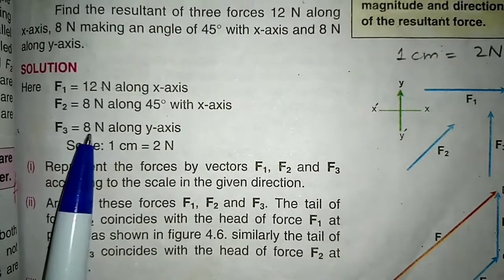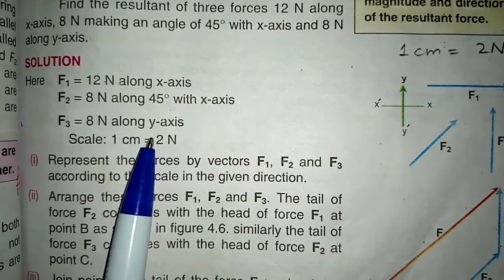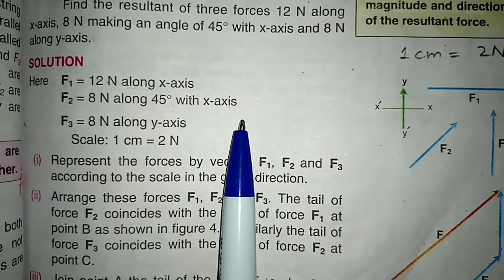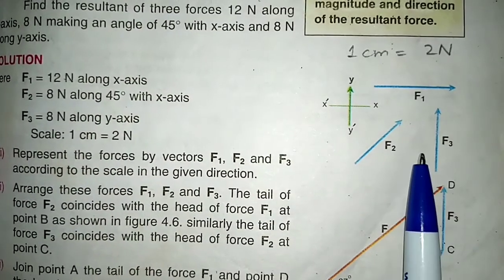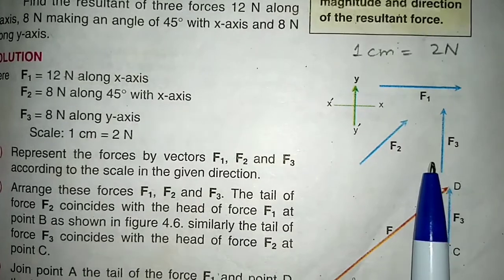The third force is 8 newton along the y-axis. This means it will be a vertical line. The y-axis is vertical. The force of 8 newton means we have drawn 4 cm. So, here we have drawn F3 with 4 cm length.